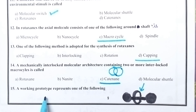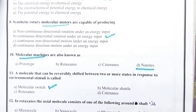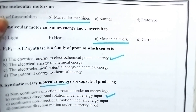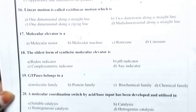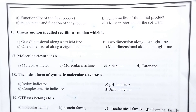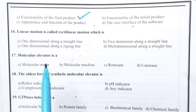A working prototype presents one of the following. Prototype means especially it is possible to evaluate new design in order to enhance precision. Prototypes can be of four types: principal prototype, prototype, functionality prototype, visual prototype, and working prototype. The functionality of the final product can be evaluated. So option A is the right answer.